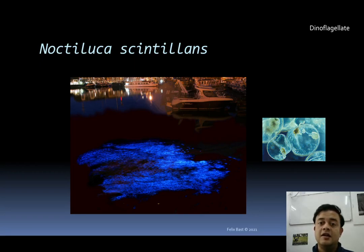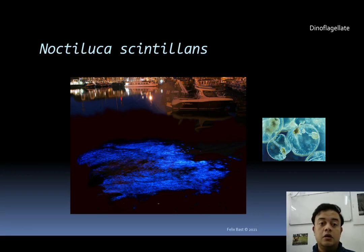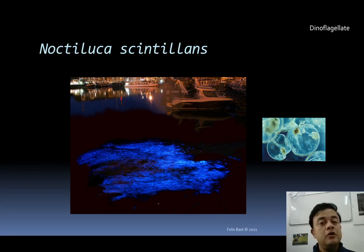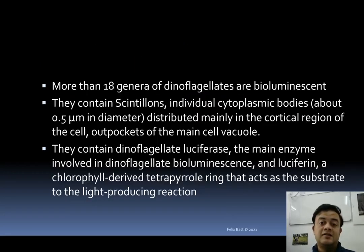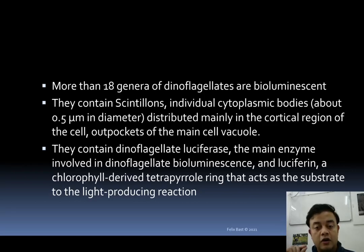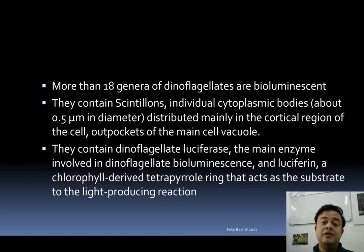Noctiluca scintillans is a very important dinoflagellate genus that causes bioluminescent algal blooms. There are papers suggesting that snow melt in the Himalayas can lead to Noctiluca blooms in the Arabian Ocean. Such curiosity-driven scientific discoveries are illuminating fascinating facets of how nature works. There are more than 18 genera of dinoflagellates that are bioluminescent — bioluminescence seems to be very common among dinoflagellates.